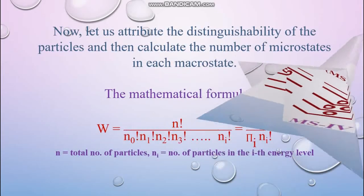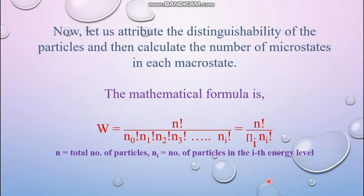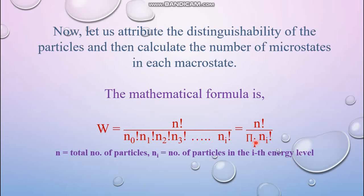To calculate the number of microstates, we use the mathematical formula: W equals N factorial divided by (n₀! × n₁! × n₂! × ... × nᵢ!), which can be written as N! over the product of nᵢ! for all i. Here N is the total number of particles — in our case, 4. And n₀, n₁, n₂ are the number of particles in the ground state, first excited state, second excited state, and so on respectively.